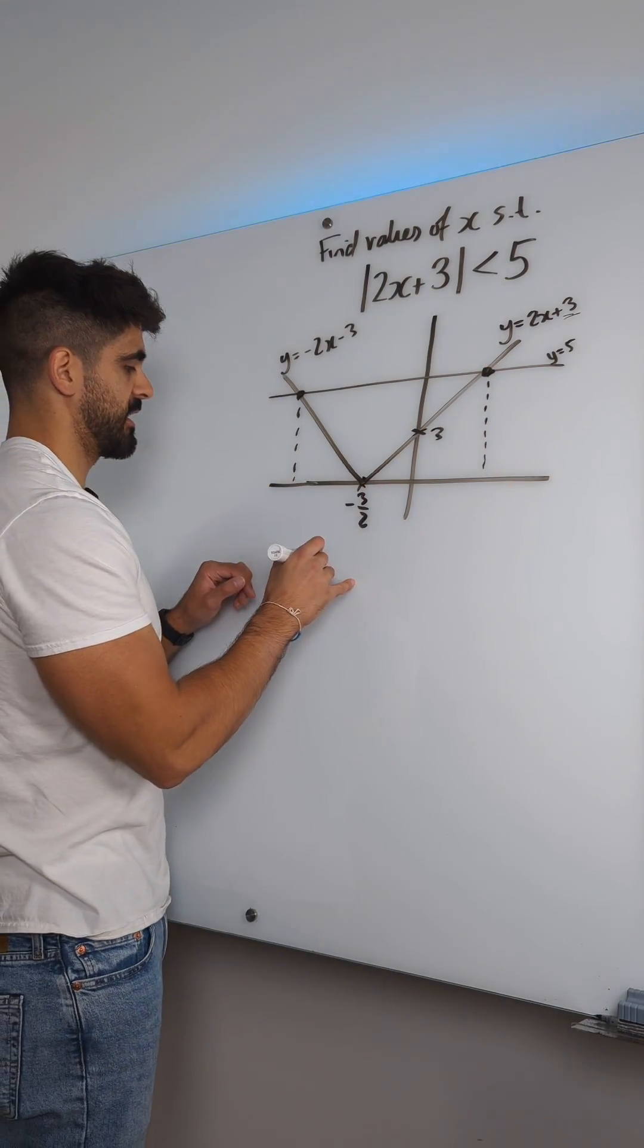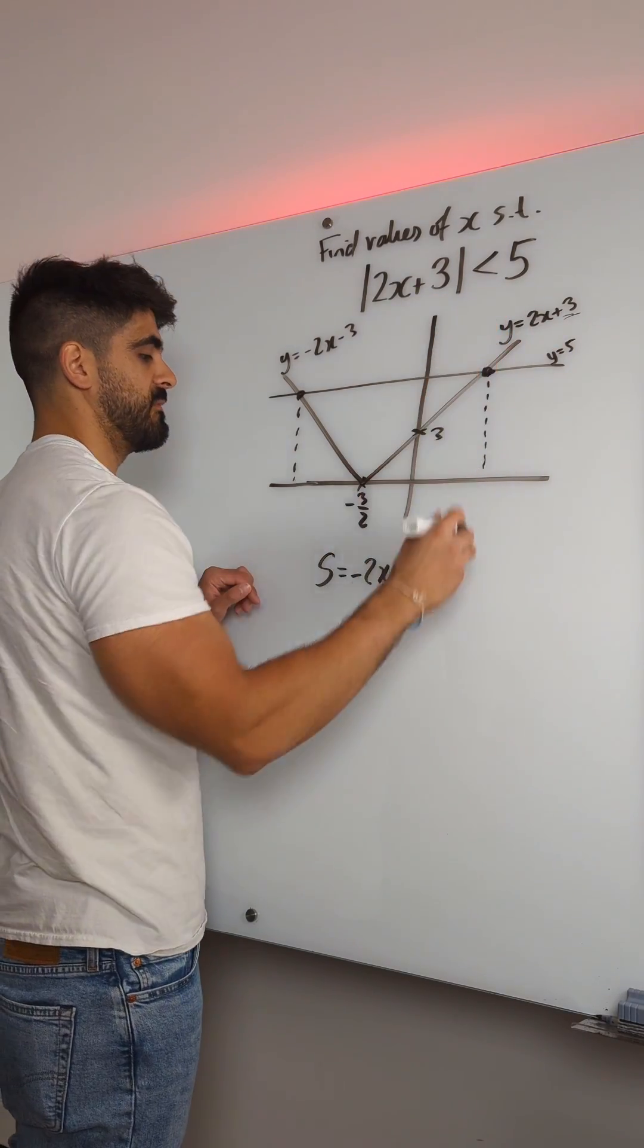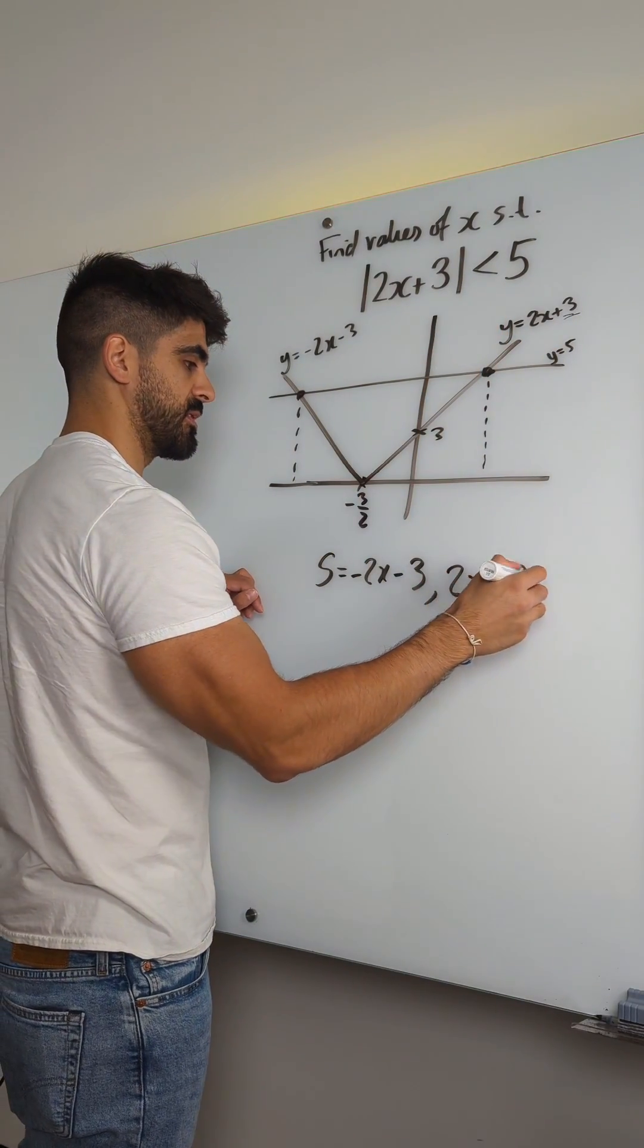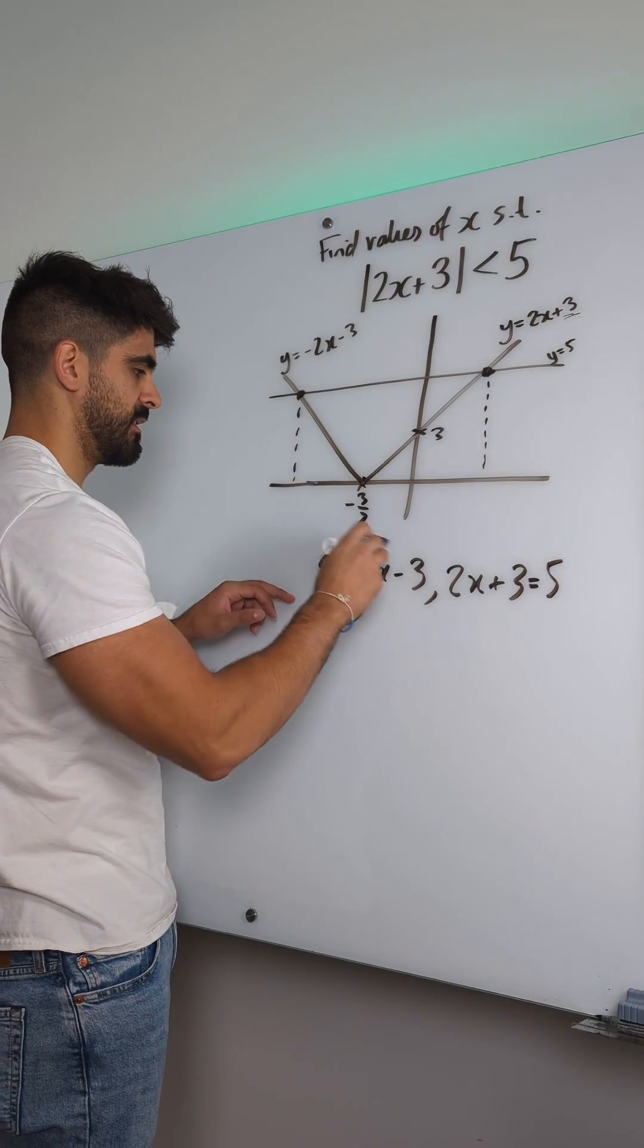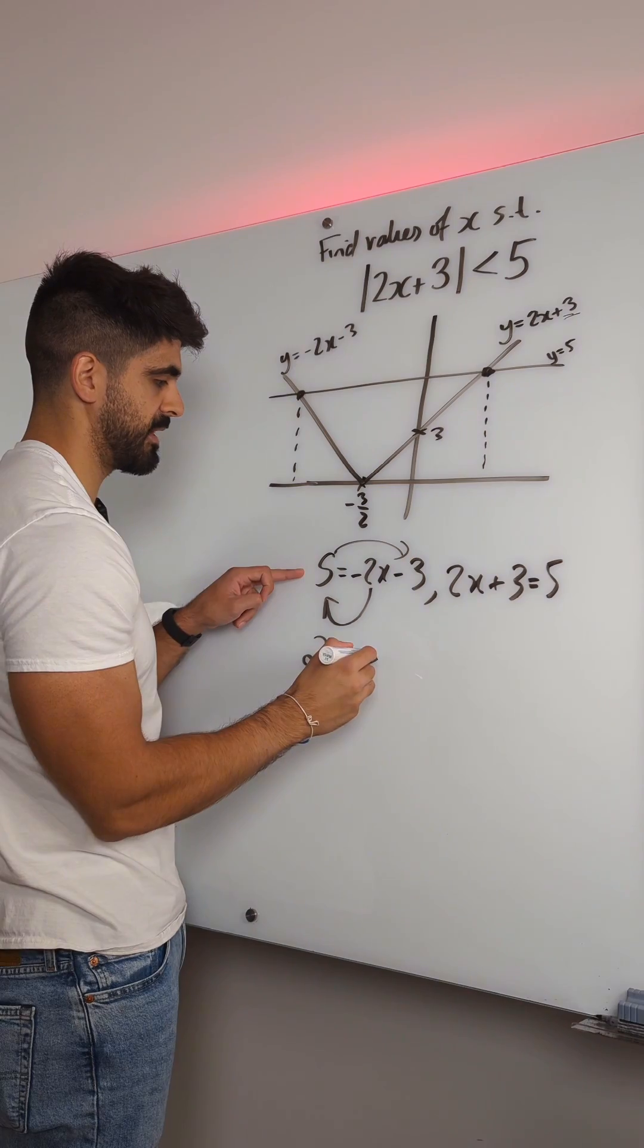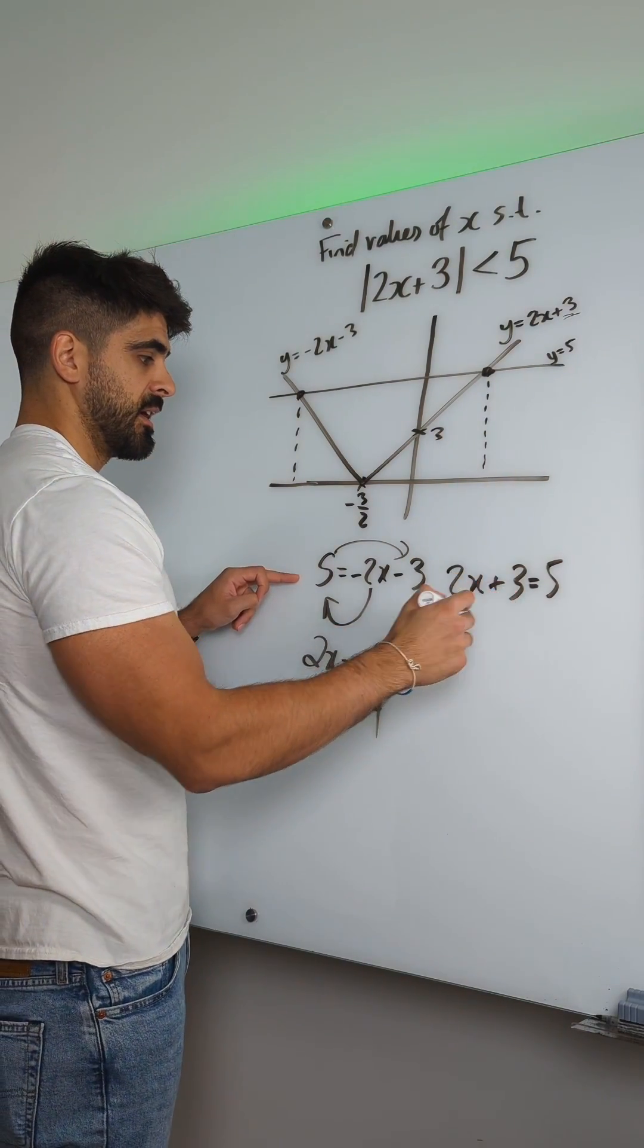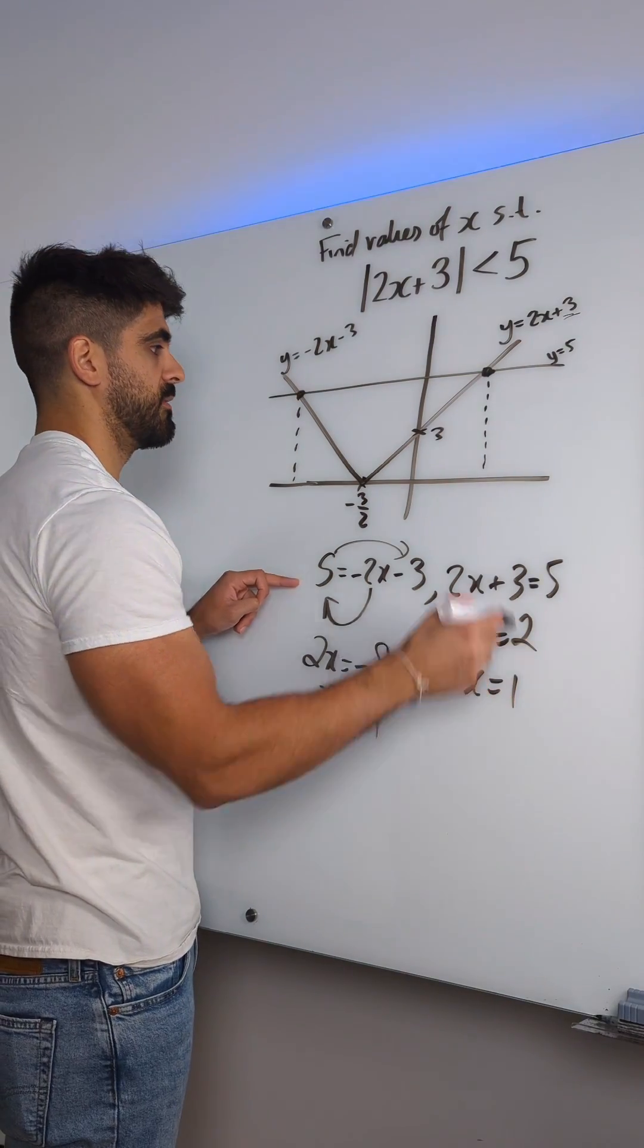So the first one, we say five equals minus 2x minus three. This one is when five equals 2x plus three. Bring that here, minus the five, so we get 2x equals—the positive five on the other side is minus 8—x is minus 4. Here we get 2x equals 2, x equals 1.